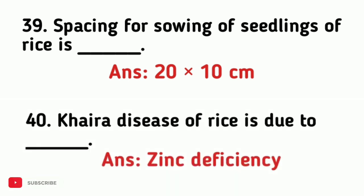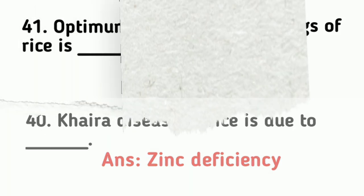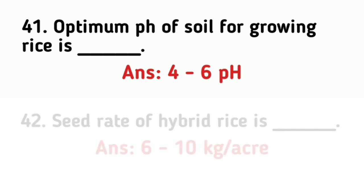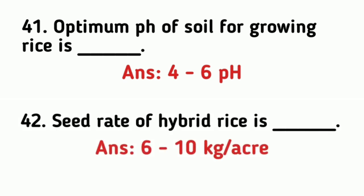Khaira disease of rice is due to zinc deficiency. The optimum pH of soil for growing rice is 4 to 6. The seed rate of hybrid rice is 6 to 10 kg per acre.